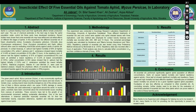Now coming to the introduction: the green peach aphid is a very economically significant pest. It causes severe leaf curling by sucking sap from leaves and new shoots, and it also transmits viruses to many plants. Among other species, green peach aphid Myzus persicae is particularly significant as a vector, transmitting Potato Virus Y, Tomato Yellow Top Virus, and Tomato Yellow Bottom Virus in tomato crops.